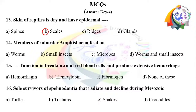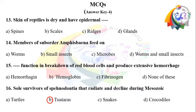Answers: Question 13 right option B — scales; skin of reptiles is dry and has epidermal scales. Question 14 right option D — members of suborder Amphisbaenia feed on worms and small insects. Question 15 right option A — hemorrhagin functions in breakdown of red blood cells and produces extensive hemorrhage. Question 16 right option B — tuataras; tuataras are the soul survivors of Sphenodontia that radiated and declined during the Mesozoic era.